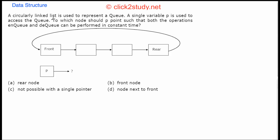Let's start the next problem. A circularly linked list is used to represent a queue. A single variable P is used to access the queue. To which node should P point such that both the operations enqueue and dequeue can be performed in constant time?